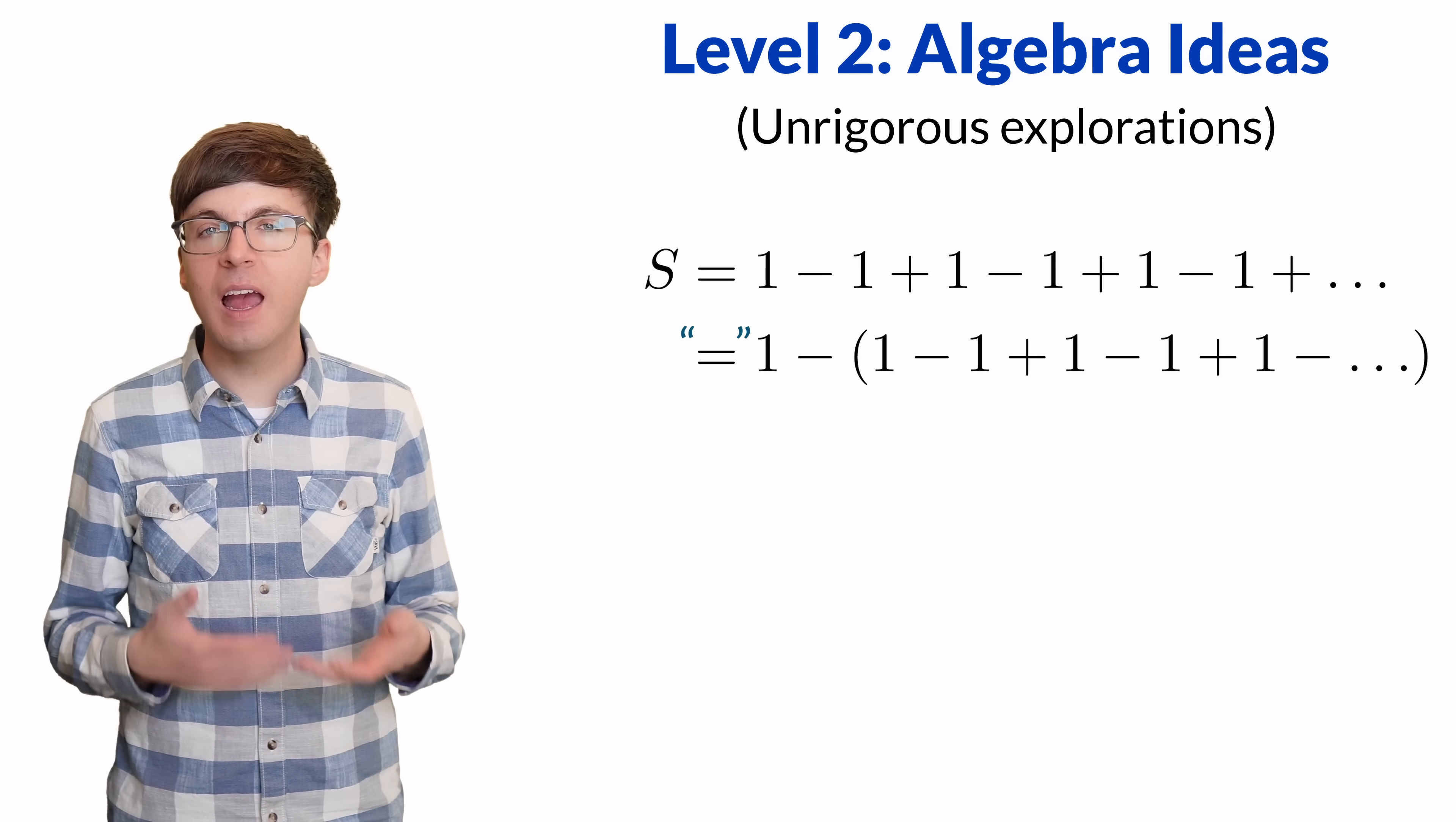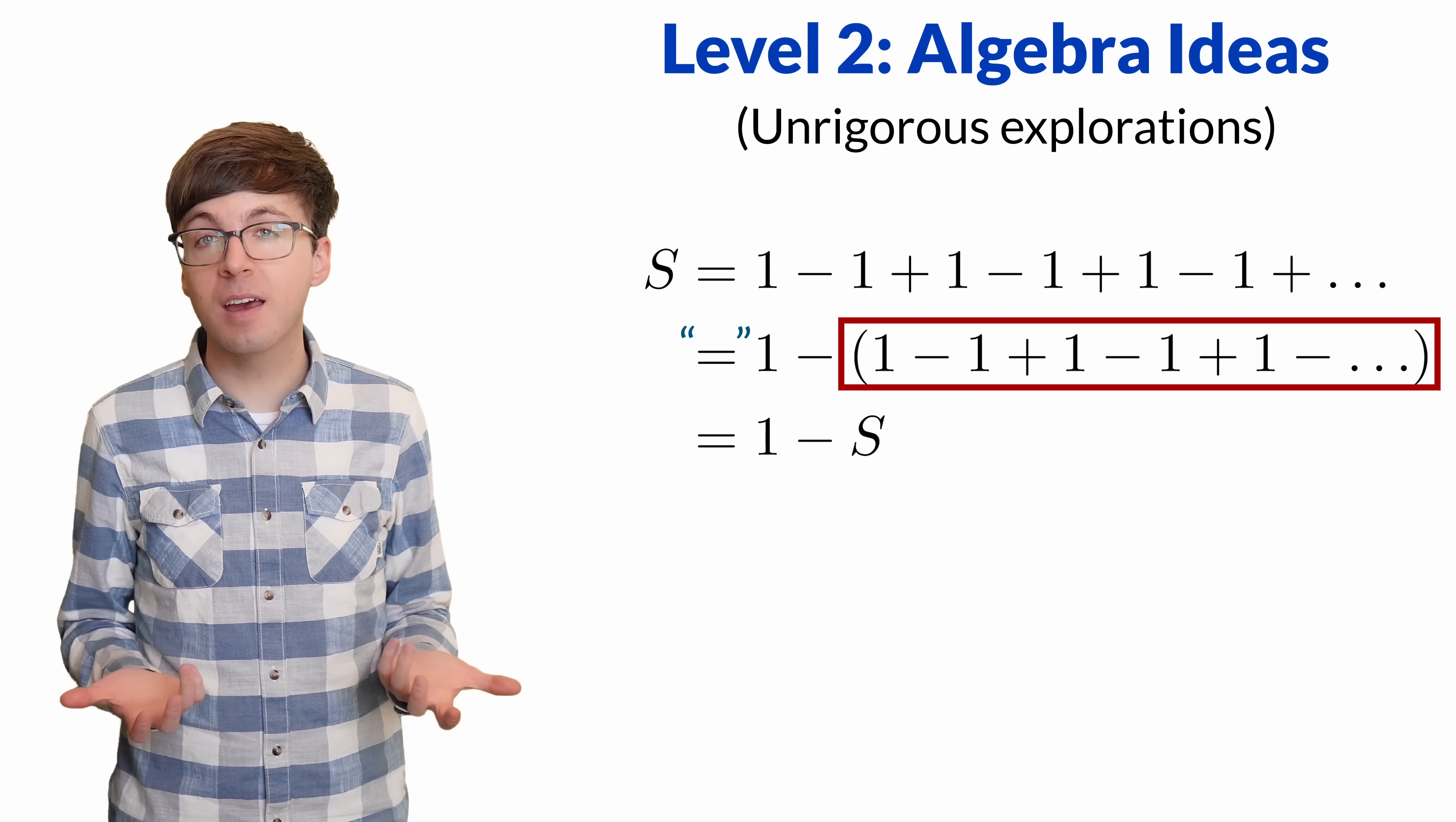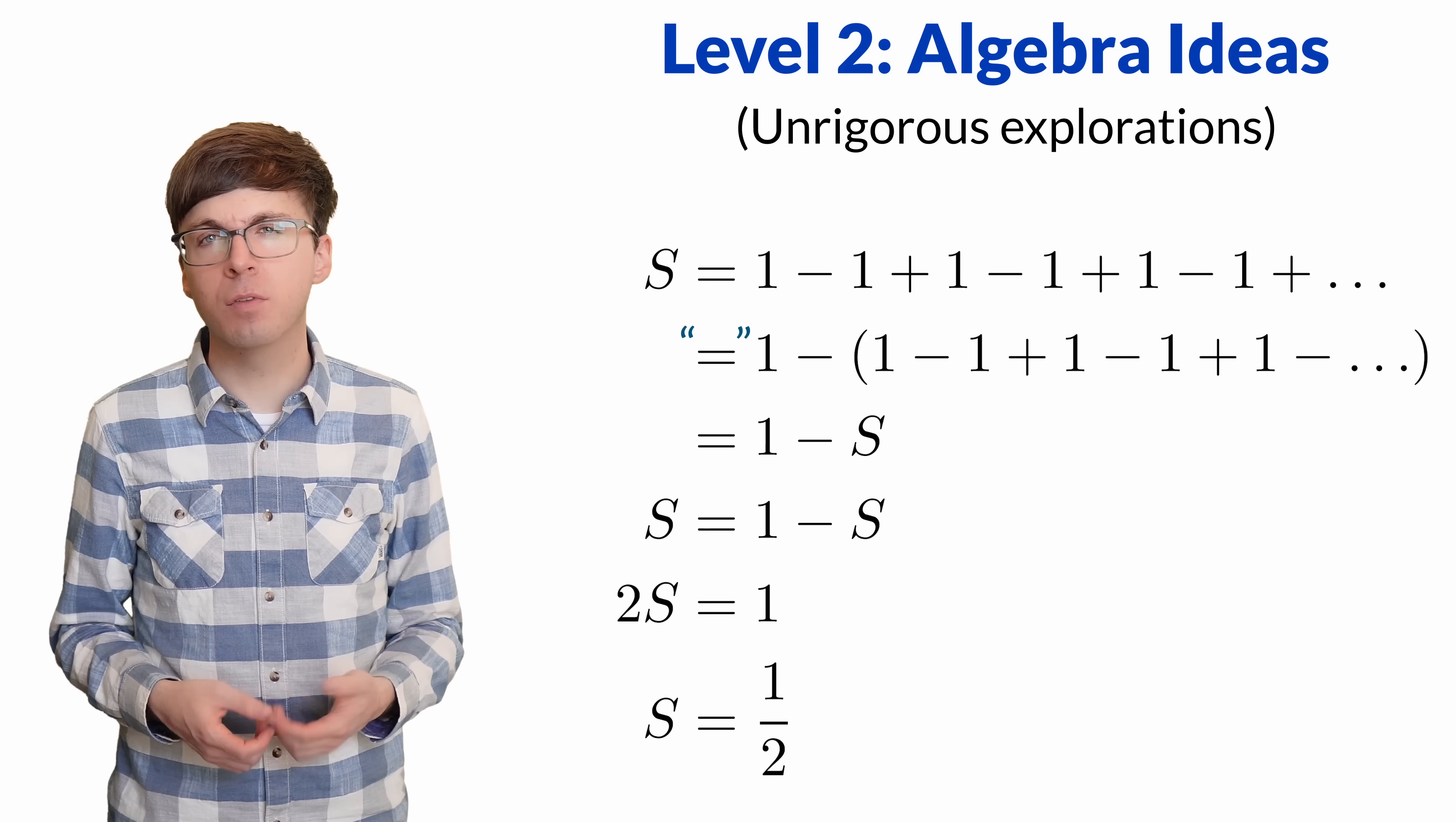Let's write this as 1 minus, and then factor out that negative sign. This will switch each minus to be a plus, and each plus to be a minus. The part that we're subtracting is exactly the same sum that we started with. This is the same as S. So we now have the equation S equals 1 minus S. Now we can solve for S. Add S to the other side to get 2S equals 1, and S equals 1 half. So we have yet another possible answer for this sum.